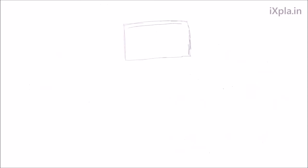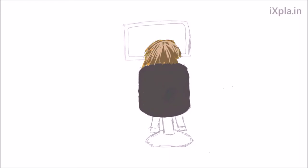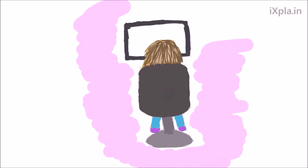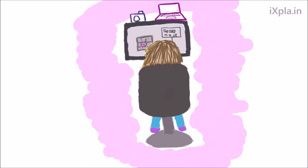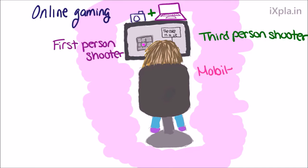Gaming systems have become more and more powerful as they develop. What used to be very simple has grown into something amazingly powerful. With the powers of computers and cameras, the gaming system has grown into something that could be described as an interactive movie. And there are so many types of games, such as online gaming, first-person shooter, and third-person shooter.